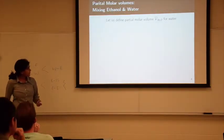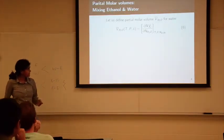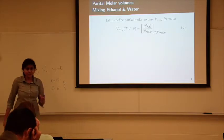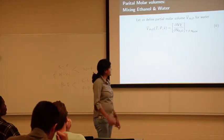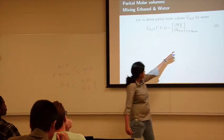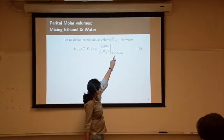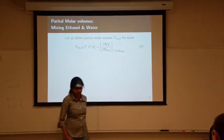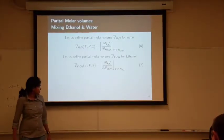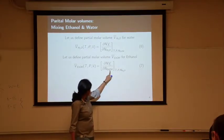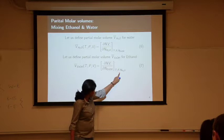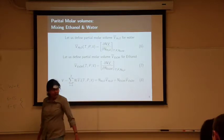We're going back to the ethanol-water mixture. We're defining the partial molar volume for water. This partial derivative is evaluated with respect to the number of moles of water while keeping temperature, pressure, and the number of moles of ethanol constant. The expression for ethanol looks similar - evaluated with respect to ethanol moles while keeping temperature, pressure, and water moles constant.